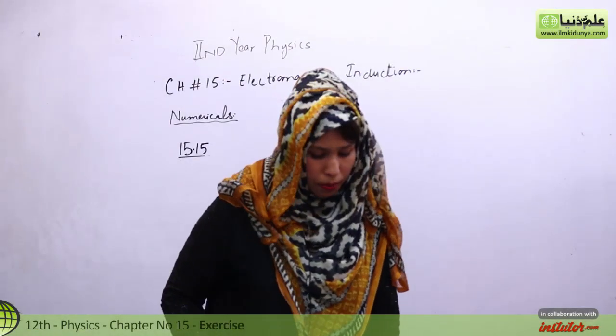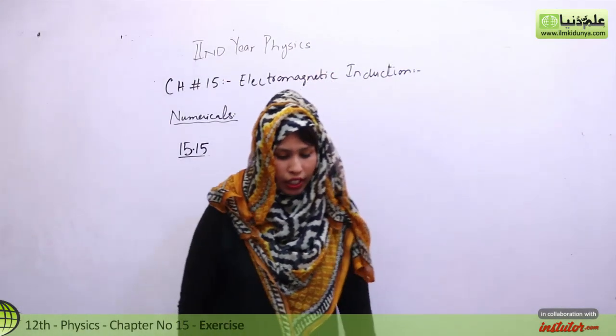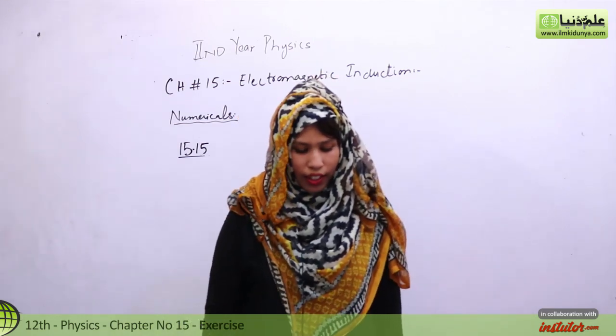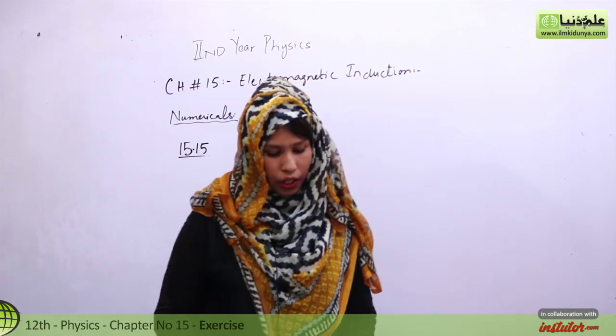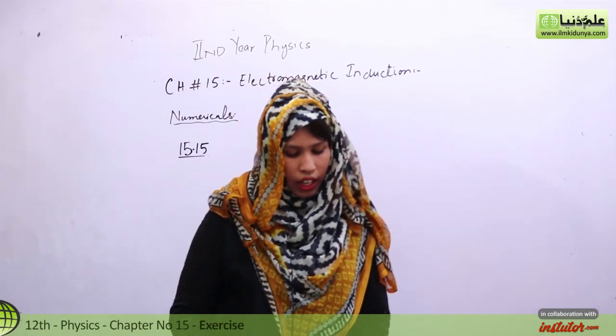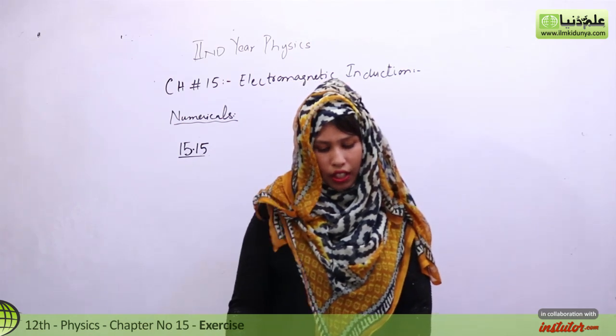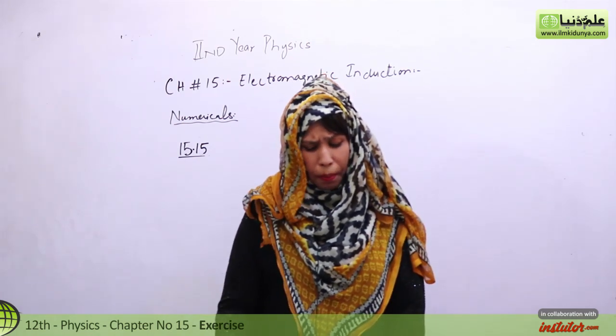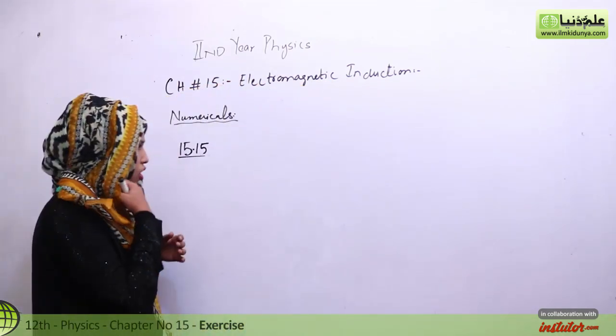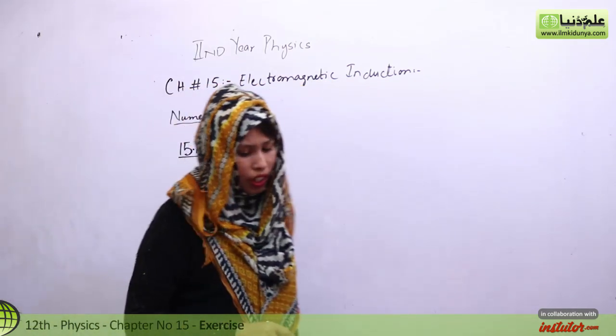Okay students, next numerical is number 15. A DC motor operates at 240 volts and has a resistance of 0.5 ohm. When the motor is running at normal speed, the armature current is 15 amperes. Find the back EMF in the armature.